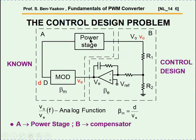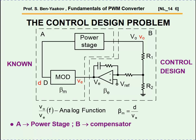Here we have the power stage and here the error amplifier. I'm showing some of the network you need around it in order to stabilize and get the performance you want. This goes into the modulator. This part here — the power stage — is known; we know its features and obviously need information about it. The modulator also has some sort of a transfer function. This is the problem of controller design, and this is the analog case we are concentrating on in this presentation.